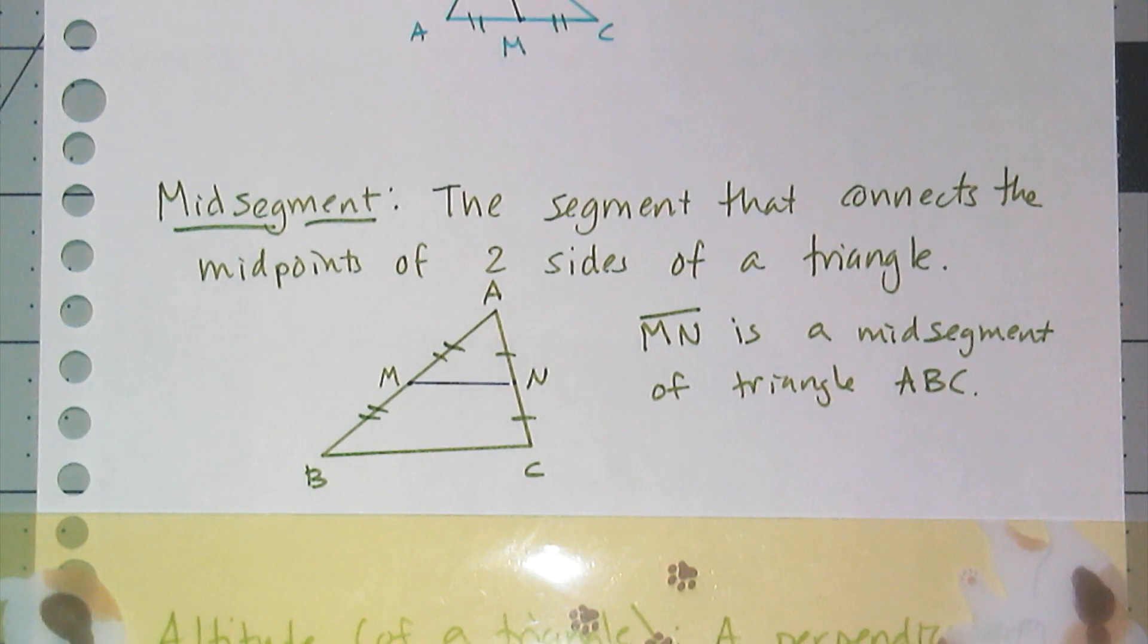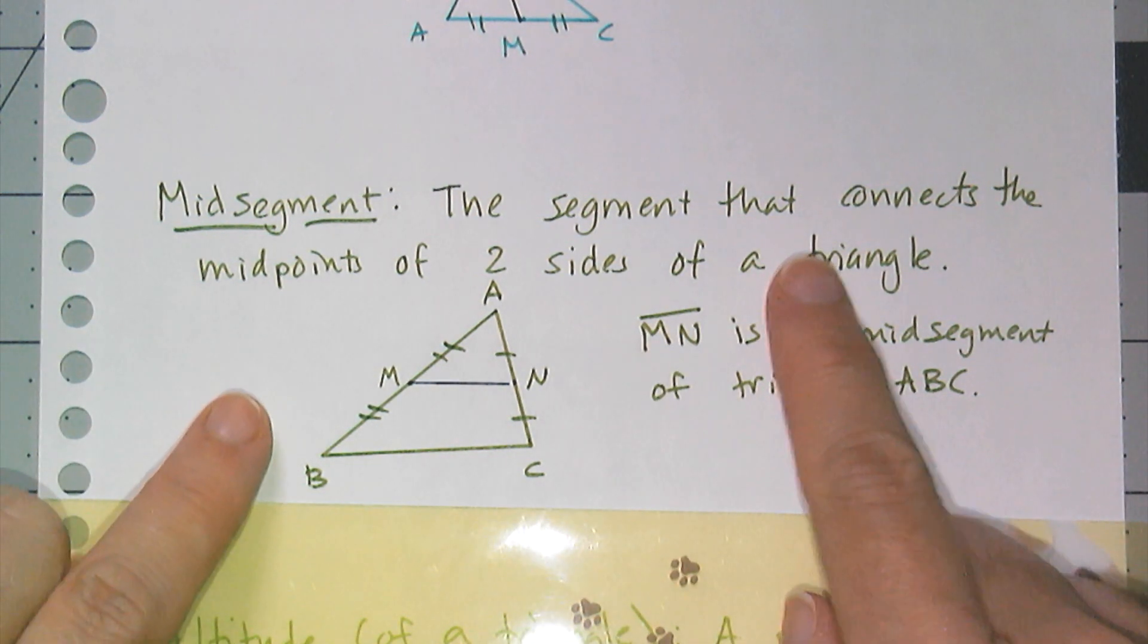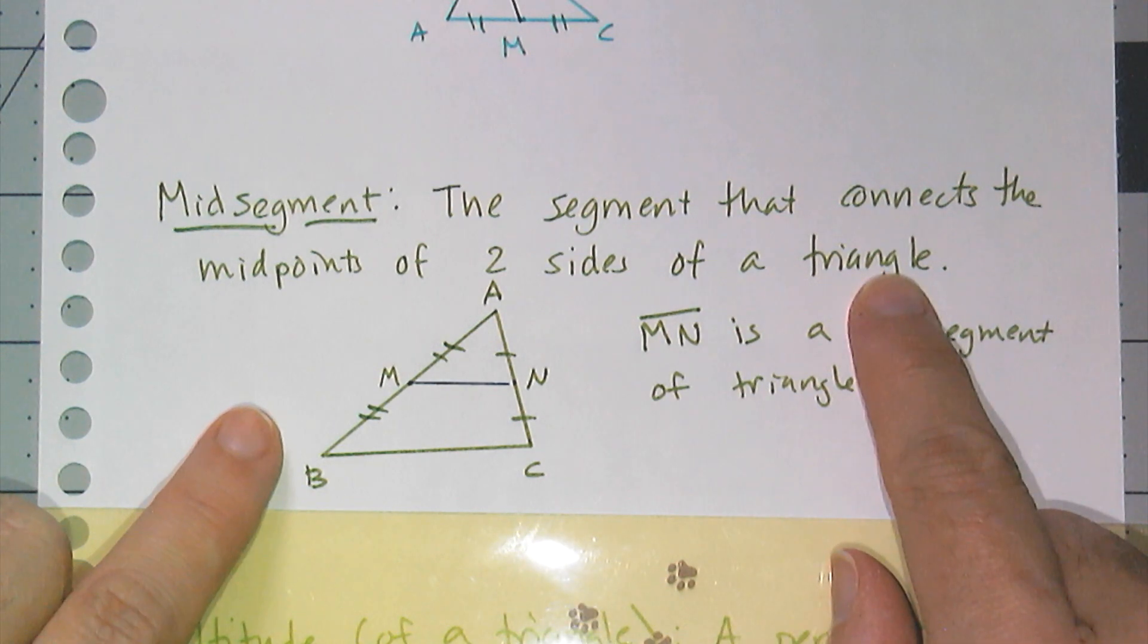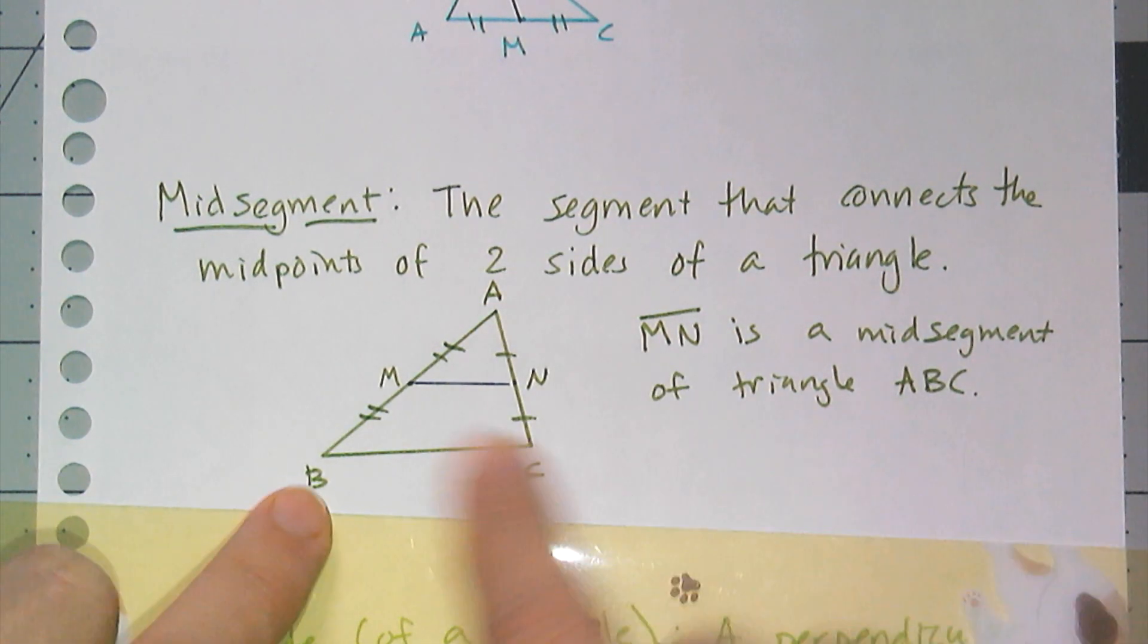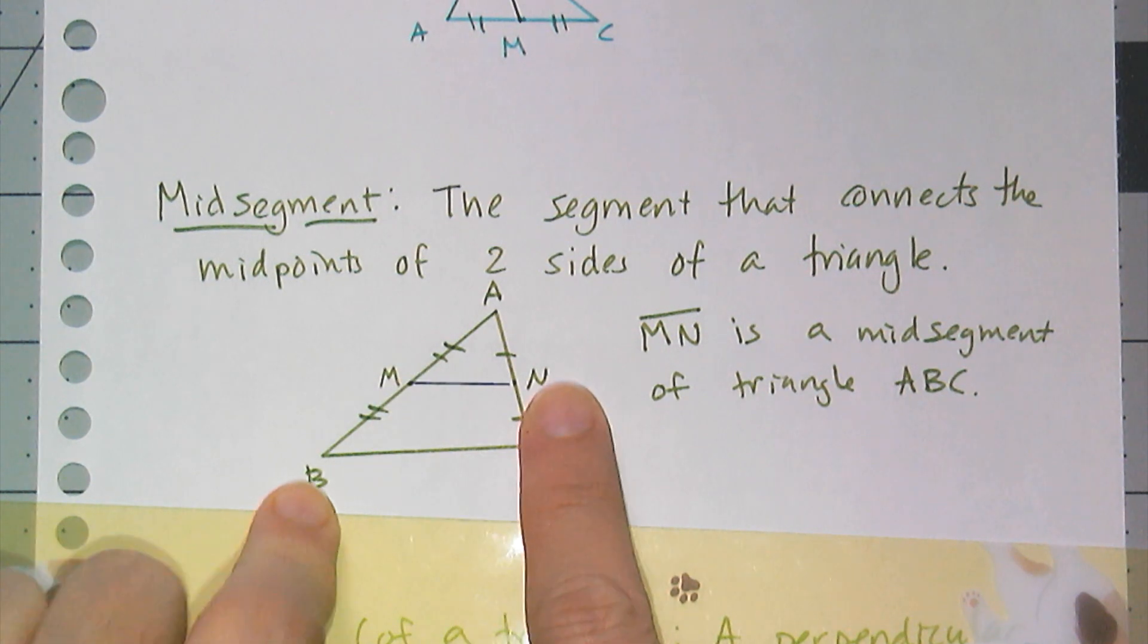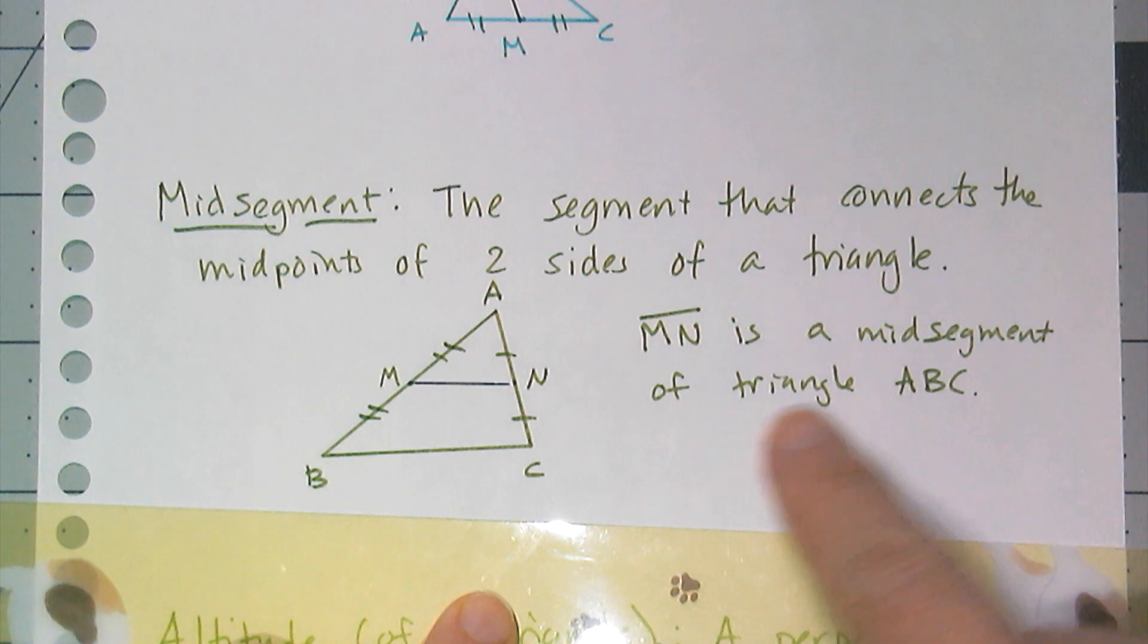The second special segment of a triangle that we're going to look at is something called a midsegment. A midsegment is a segment that connects the midpoints of two sides of a triangle. So the two sides I have are AB and AC and their midpoints are M and N. If I connect MN then MN is called the midsegment of triangle ABC.